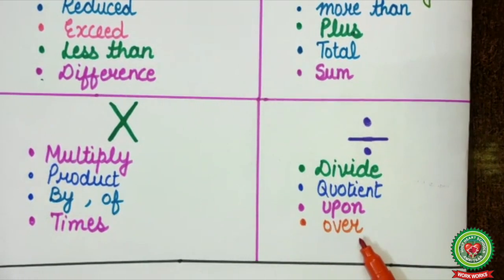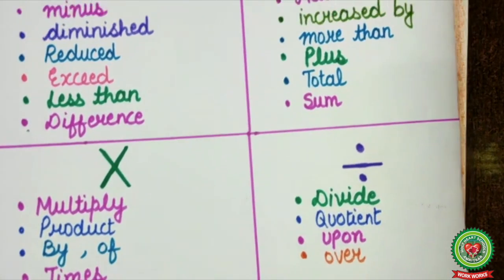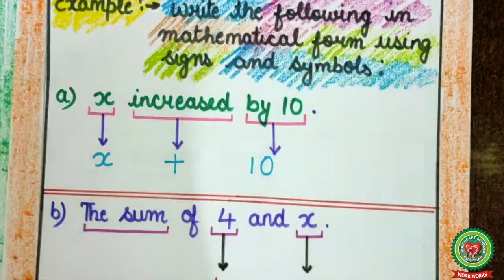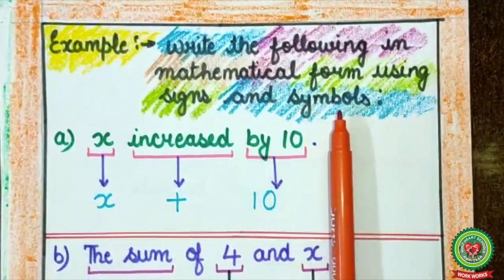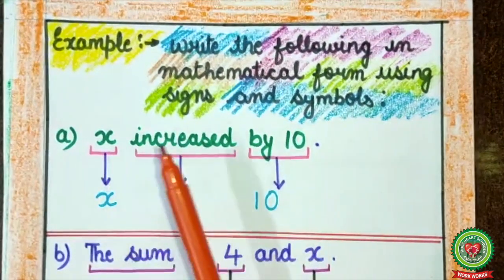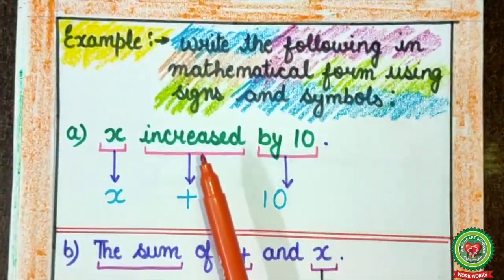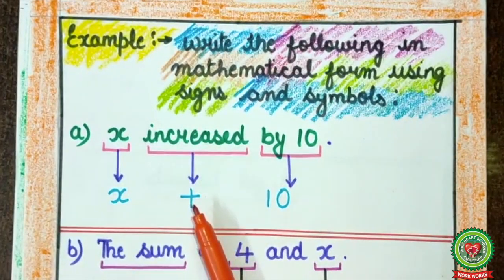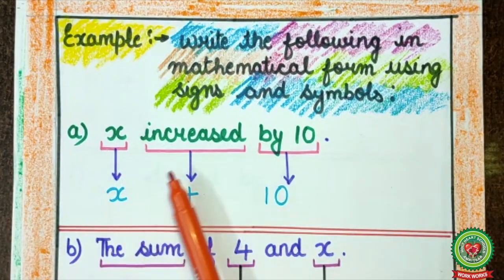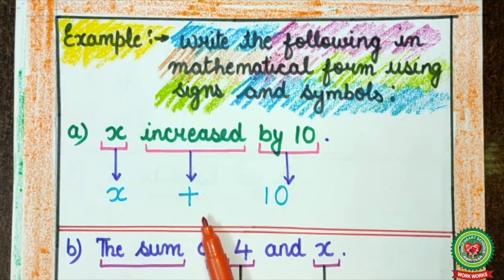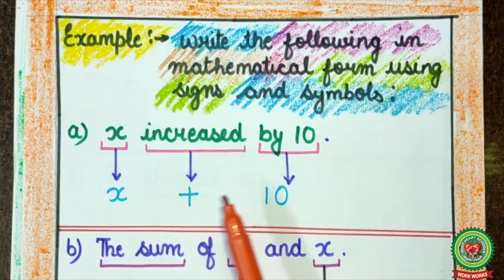So, let's understand with examples. We are going to write the following in mathematical form using signs and symbols. Here, the first example is X increased by 10. Just now I told you, increased means plus. So, how will we write it in mathematical form? X is a variable, it remains the same. Increased means the symbol of plus, by 10. So, here it comes: X plus 10.